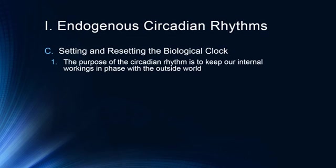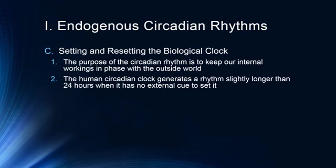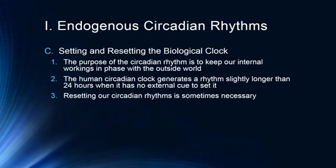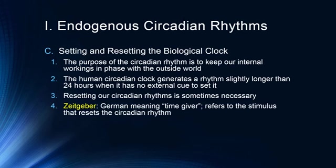The purpose of the circadian rhythm is to keep our internal workings in phase with the outside world. The human circadian clock generates a rhythm slightly longer than 24 hours when it has no external cues. In classic studies where people were isolated in places with no environmental cues — no clocks, no sunlight — they fell into a cycle closer to 25 hours. So sometimes resetting our circadian rhythm is necessary to get us back on schedule.